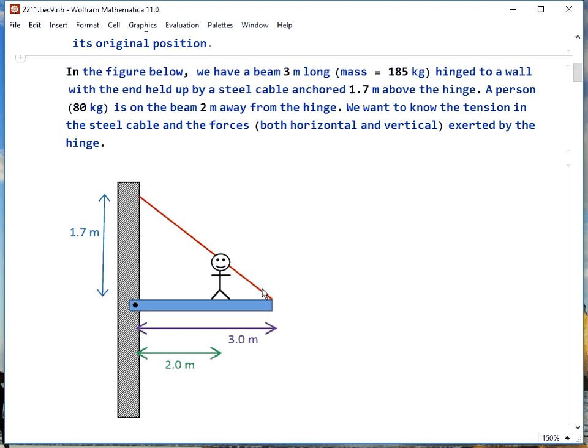If the steel cable anchor is 1.7 meters above the hinge, and an 80 kilogram person on the beam is two meters away from the hinge, we'd like to know the tension in the cable and the forces exerted by the hinge, and we have to assume that there are forces in both the horizontal and vertical directions from the hinge.